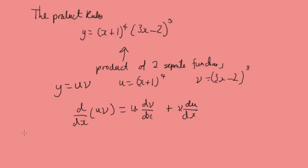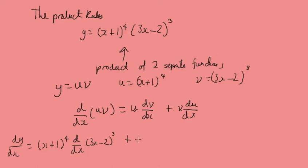In this example, dy by dx equals the first function — (x plus 1) to the power 4 — times the derivative of the second function, (3x minus 2) to the power 3, plus (3x minus 2) to the power 3 times d by dx of (x plus 1) to the power 4.